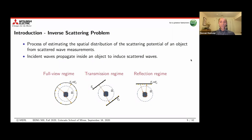Let me first introduce what I mean by inverse scattering. Inverse scattering is the process of estimating the spatial distribution of the scattering potential of an object from scattered wave field measurements. We're trying to estimate the properties of objects by bombarding them with electromagnetic waves, measuring the scattered waves that propagate through the object, and determining what properties those objects are made of. We focus today on a specific property: the relative permittivity of these objects, assuming they are lossless in an electromagnetic sense.